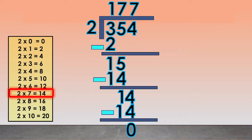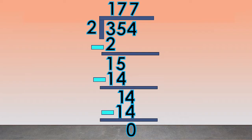Since we are not left with any digits of the dividend to bring down, we are finished. The quotient is 177.